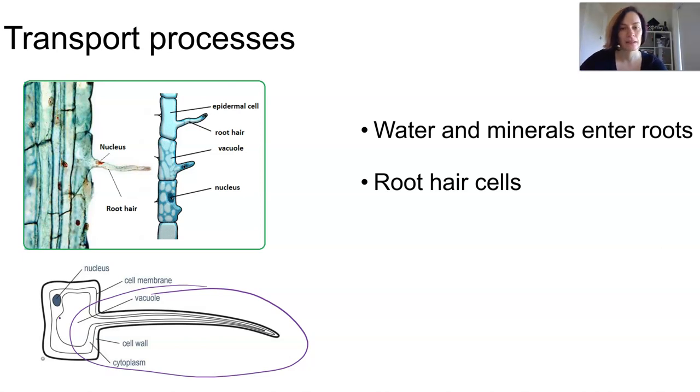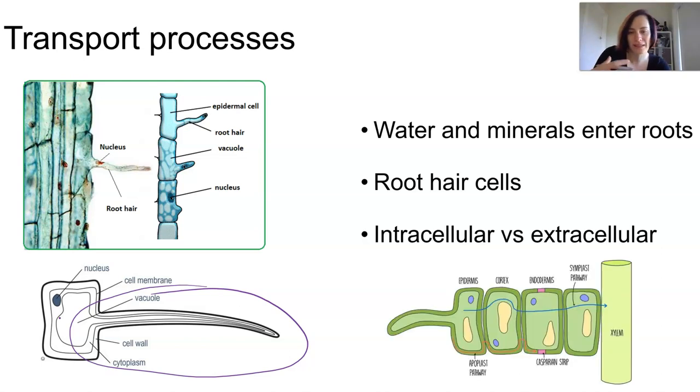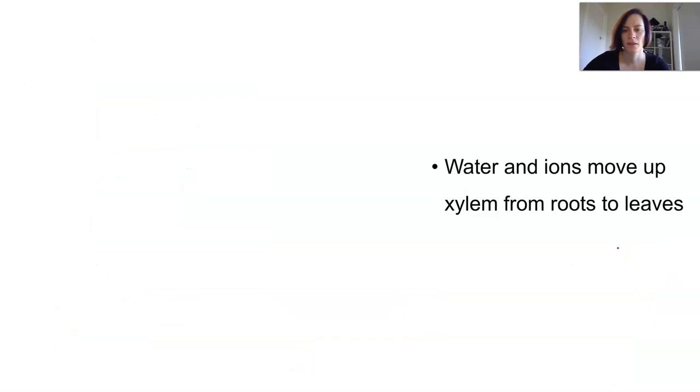There's also some extracellular absorption of water and minerals, meaning that instead of passing through the cell membranes of these cells in the roots, they actually just pass around the cells. Instead of using various types of membrane transport, they kind of bypass that. This is intracellular movement, but the extracellular movement will be happening around the cell walls. Eventually the water and minerals will have to end up in the same place, regardless of how they entered through the roots or across the membranes or extracellularly.